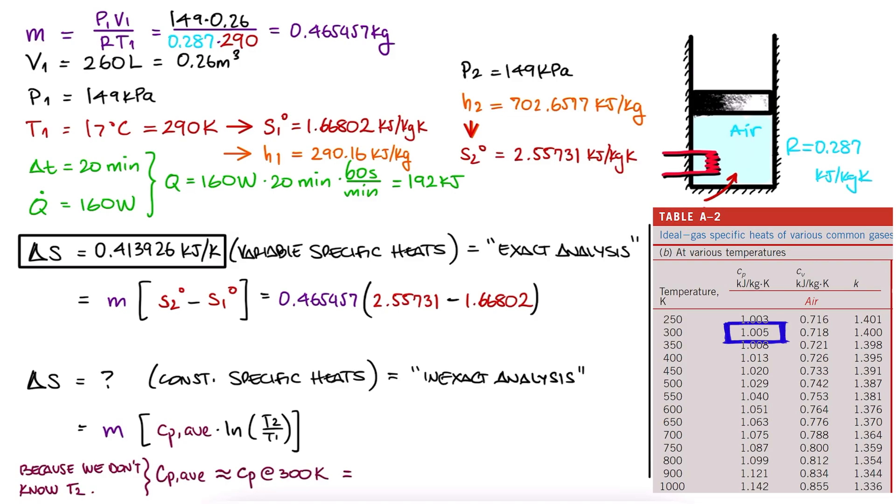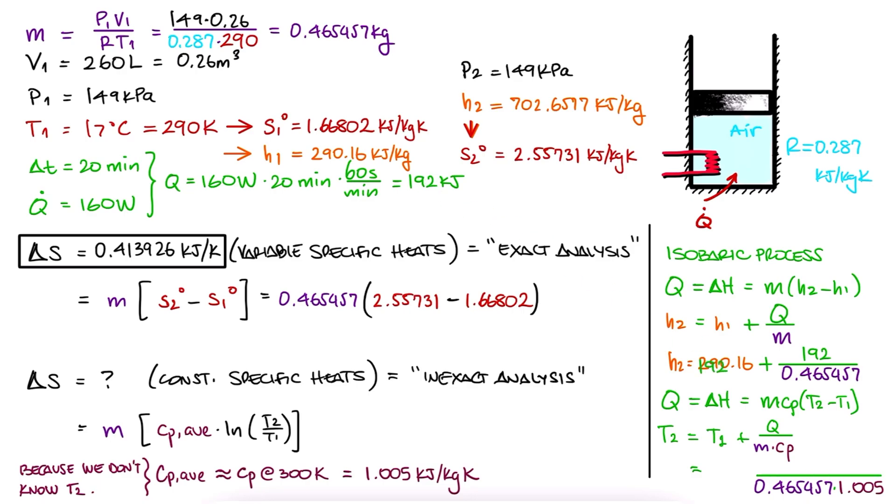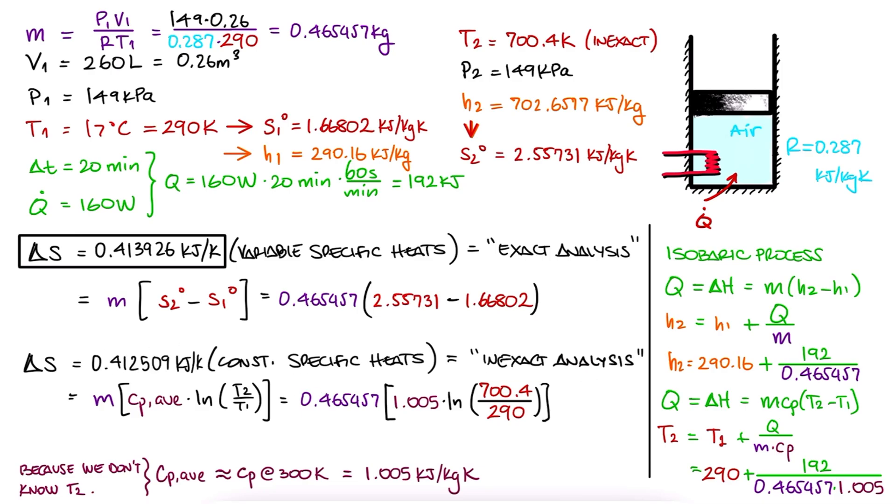We look up that value for air at 300 Kelvin. We substitute the values with T1 in Kelvin and find T2 in Kelvin. Now we go back to our original expression, and we use this same Cp value, substitute the mass and temperatures, and find the change in entropy.